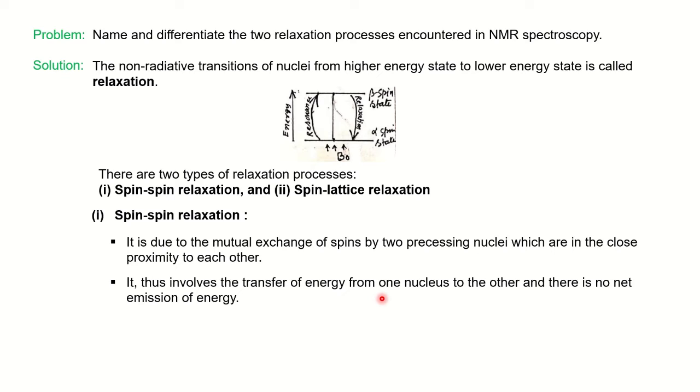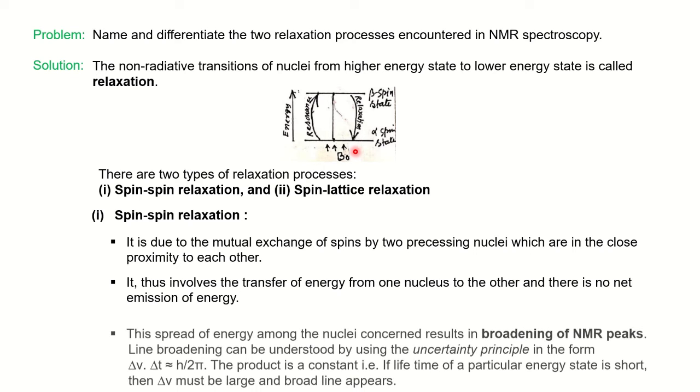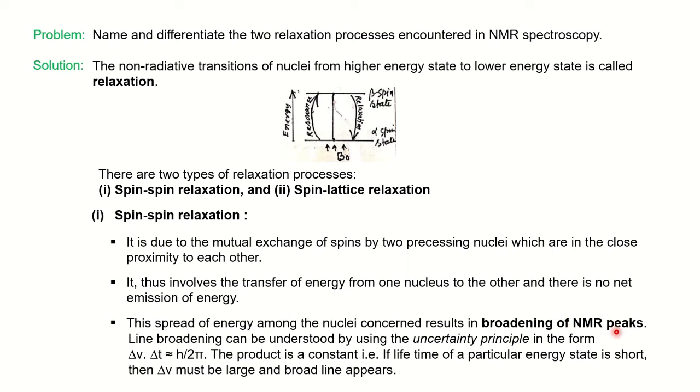This process only shortens the lifetime of the individual nucleus in the higher spin state. Since no exchange of energy takes place, the lifetime is very short and it comes back to ground state quickly. This causes broadening of NMR peaks due to spin-spin relaxation.